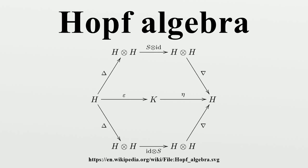Related concepts: graded Hopf algebras are often used in algebraic topology. They are the natural algebraic structure on the direct sum of all homology or cohomology groups of an H-space. Locally compact quantum groups generalize Hopf algebras and carry a topology. The algebra of all continuous functions on a Lie group is a locally compact quantum group. Quasi-Hopf algebras are generalizations of Hopf algebras where co-associativity only holds up to a twist. They have been used in the study of the Knizhnik–Zamolodchikov equations.